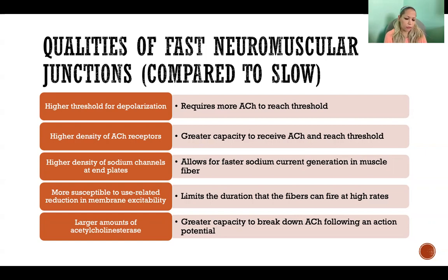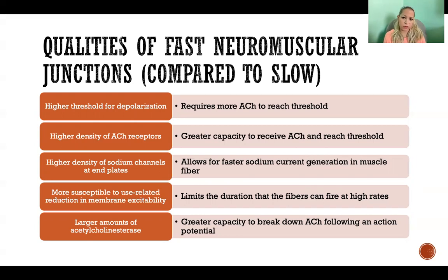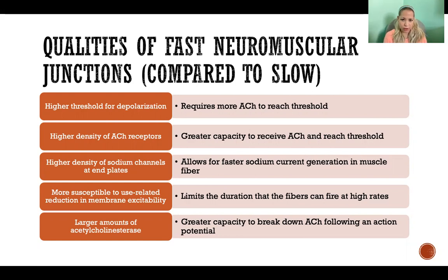Also in a fast neuromuscular junction, we'll have larger amounts of acetylcholinesterase, which is the enzyme that helps break down acetylcholine after the action potential has been generated. There's a greater capacity for breaking down acetylcholine — getting rid of the stimulus for contraction after the action potential. The acetylcholine doesn't linger as long as it does in slow neuromuscular junctions, because the sooner we get rid of that stimulus, the sooner we can stop contraction, which we want in a fast neuromuscular junction so we don't fatigue the fibers.